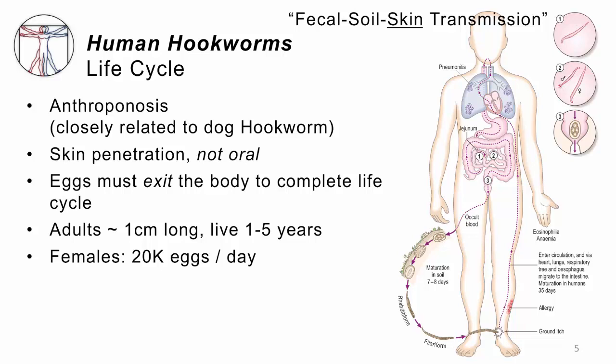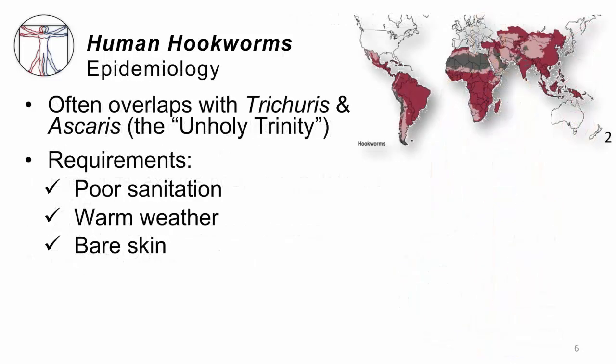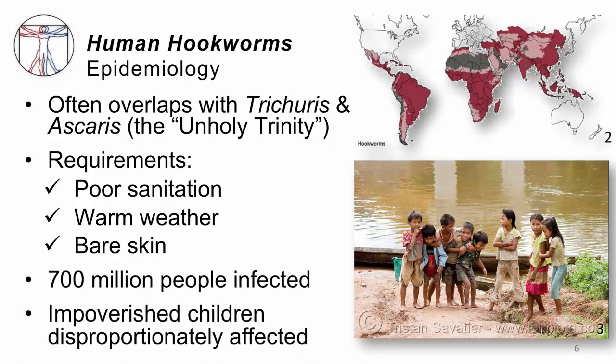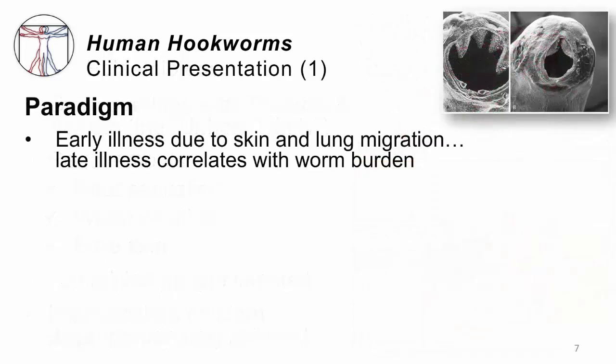Because each female will make 20,000 eggs per day, this infection can persist in a community for a very long time. Where does this happen? It happens throughout the tropics, and in fact there's tremendous overlap with some of the other worms we've talked about — Trichuris, the whipworm, and Ascaris, the giant roundworm. Together, these three form a so-called unholy trinity of parasitology. Any place where there's poor sanitation, warm weather, and bare skin, this hookworm infection will flourish. It's felt that there are hundreds of millions of people who are infected, and children who are poorly clothed are disproportionately heavily affected.